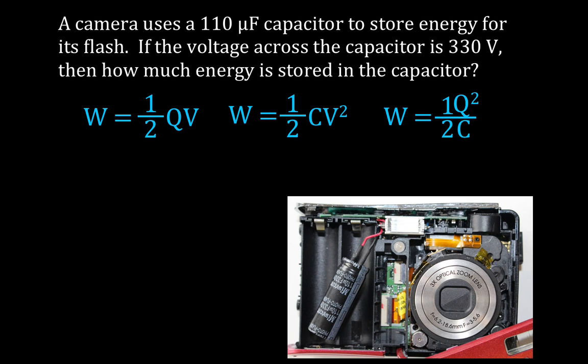The next one is now in a camera. Now this is inside of a camera, an old camera I have. And you'll notice it has a flash. And the energy for that flash is stored in this capacitor, this capacitor right here. These are the two batteries. We have a camera that uses a 110 microfarad capacitor. The voltage across the capacitor is 330 volts. And we want to know how much energy is stored in the capacitor.